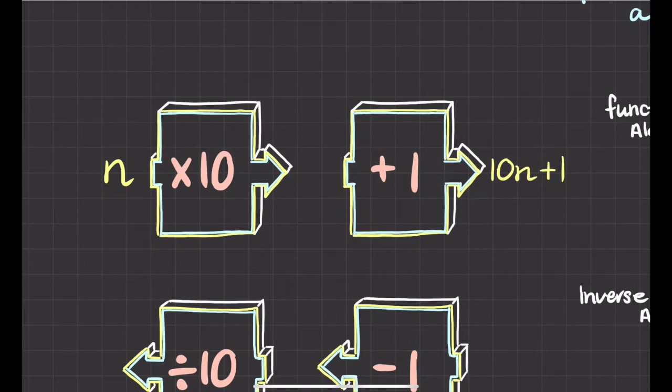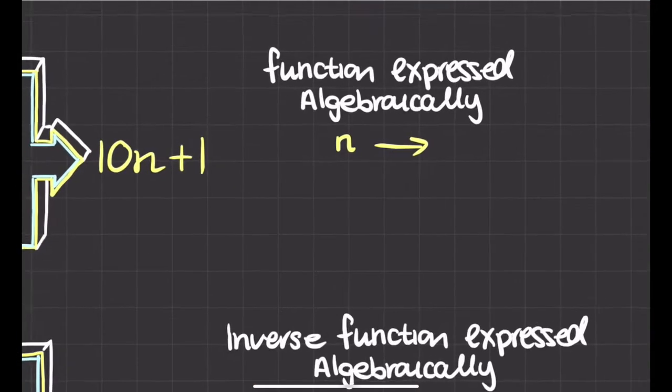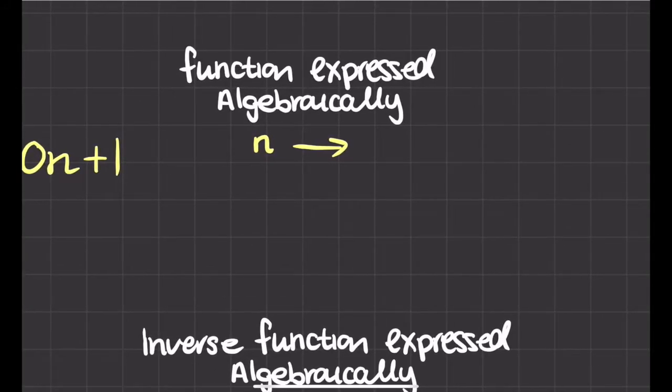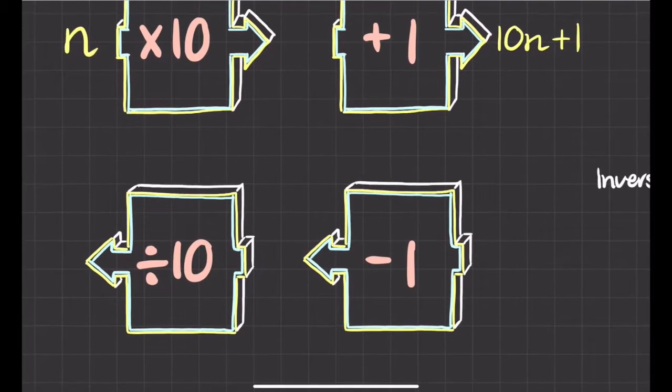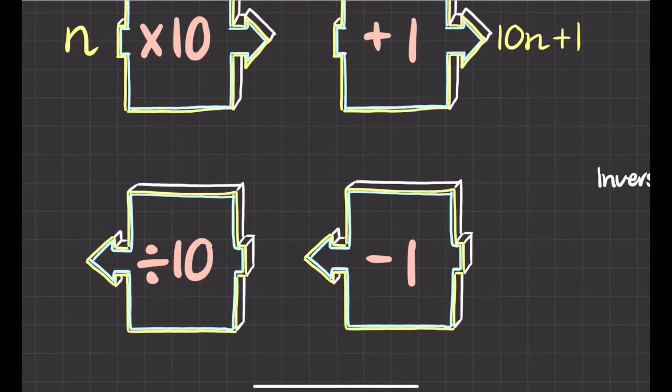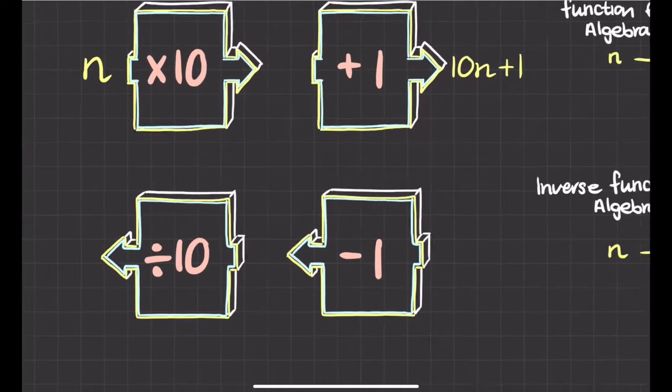I could write that algebraically. I could say whatever my number is, the answer that I get is 10n + 1, so 10 of my number plus 1. Now I could do the opposite of all this - I could do what we call the inverse function.